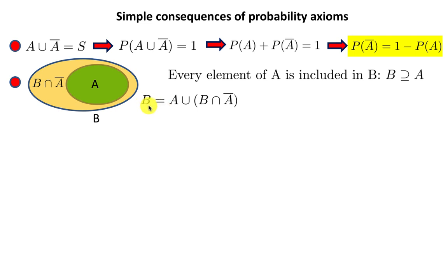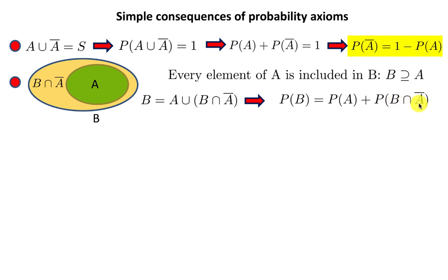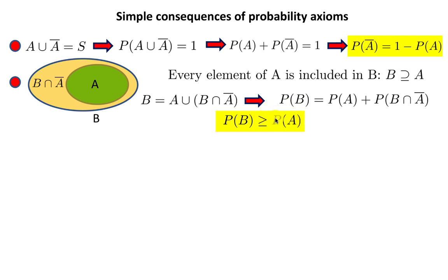We can write B = A ∪ (B ∩ A-bar). By the second axiom, P(B) = P(A) + P(B ∩ A-bar). As the diagram shows, B ∩ A-bar has no elements in common with A, so the sum of two independent events follows. From this, P(B) ≥ P(A), because every probability has to be a positive number or equal to zero. It also makes sense: if B is the bigger set, the chance of B happening has to be greater than the chance of A happening.